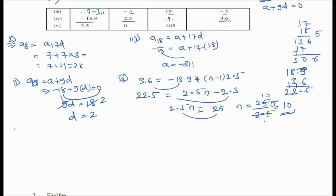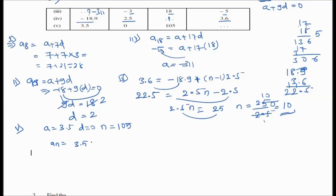Fifth question: a = 3.5, d = 0, and n = 105. We have to find an. Using an = a + (n-1)×d: an = 3.5 + (105-1)×0 = 3.5. Since d = 0, anything times 0 is 0, so an = 3.5 is the answer.